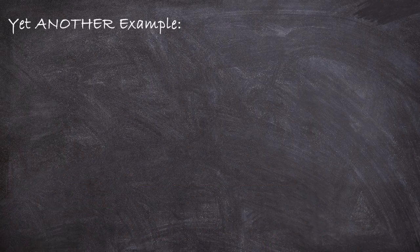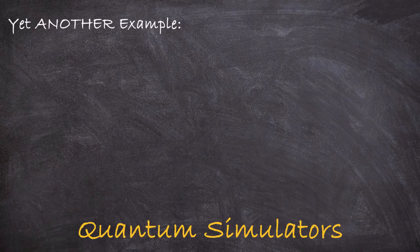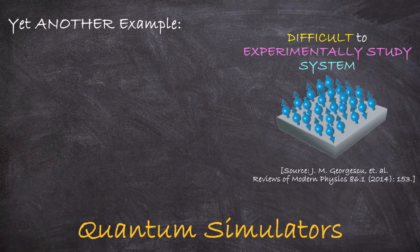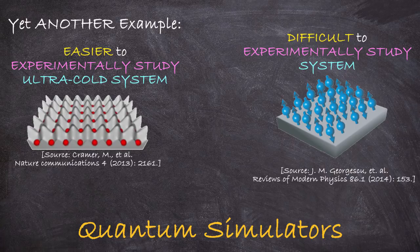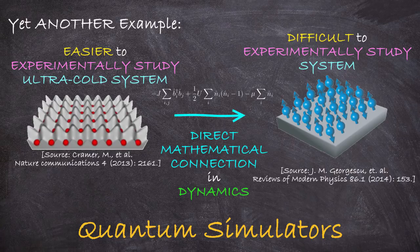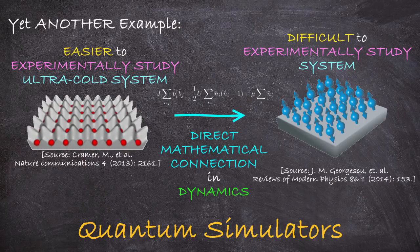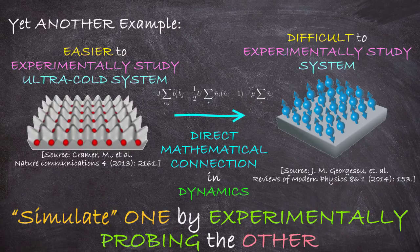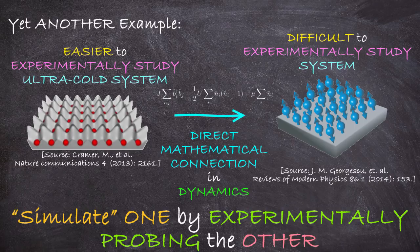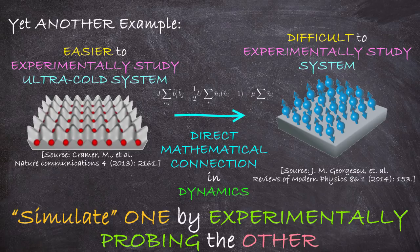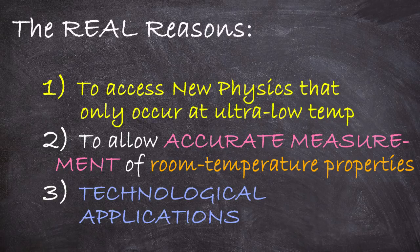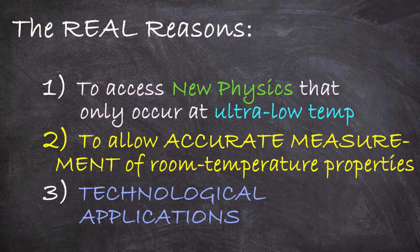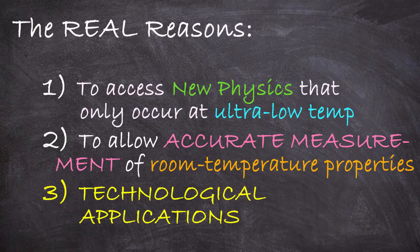They're also key in the related field of quantum simulators, where one teases insights into one system by directly manipulating a different system. The idea being that if you know that the two very different systems actually have a deep mathematical connection in their physical behavior, you can learn a lot about a difficult-to-study system by exploring an easy-to-control-and-measure system. Ultra-cold atoms are great for these kinds of quantum simulations. So those are generally our reasons. Either we're trying to explore what nature can do in new regimes, or we're trying to get more accurate measurements of things nature does at more regular regimes, or we just want to make new technology.